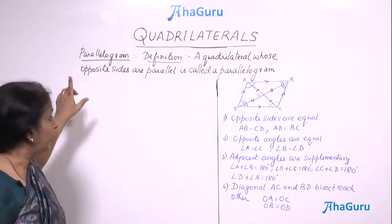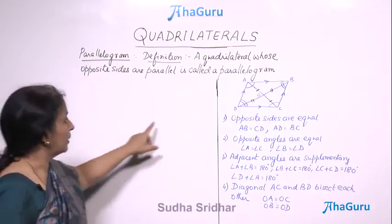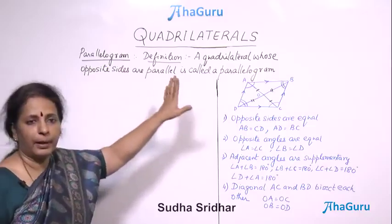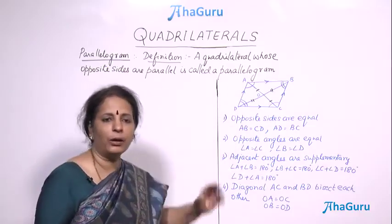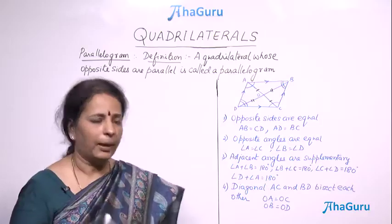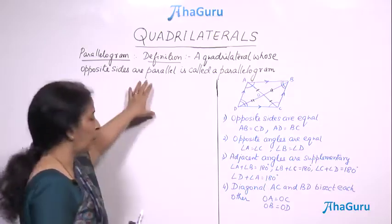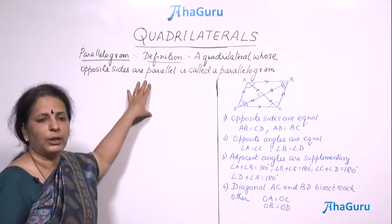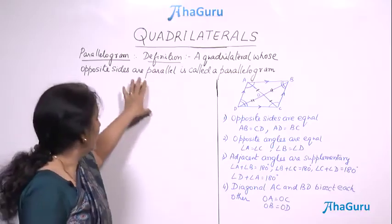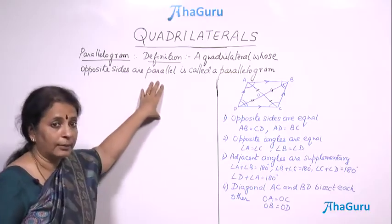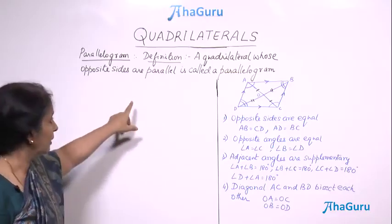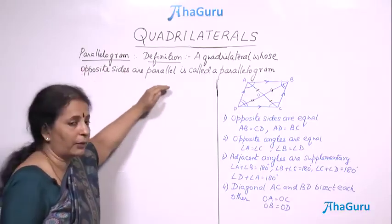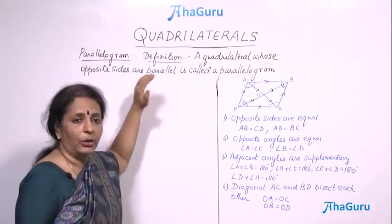A parallelogram, as per definition, is a quadrilateral whose opposite sides are parallel — that is all we know about a parallelogram. There are four sides, so naturally two pairs of opposite sides. They are not equal, they are parallel. Please understand it is the parallel that is why the word parallelogram has come — so this is the definition.